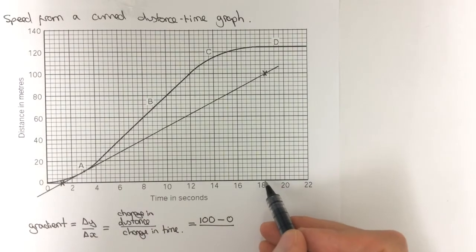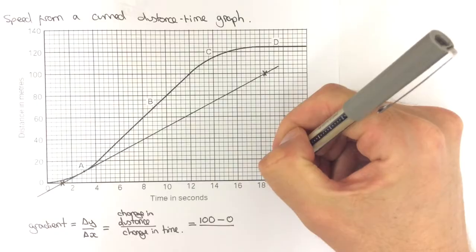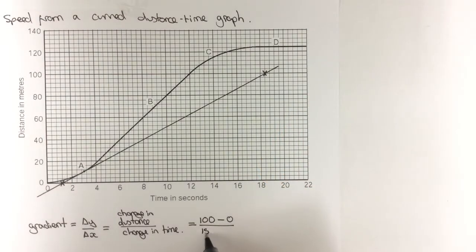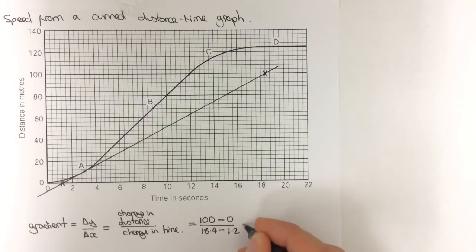So, that would mean at the finish, it's 18 and one little square, so that would be a time of 18.4. And then, the time at the start is three little squares, each worth 0.4, which would be 1.2. So, that would give me 100 over 17.2.